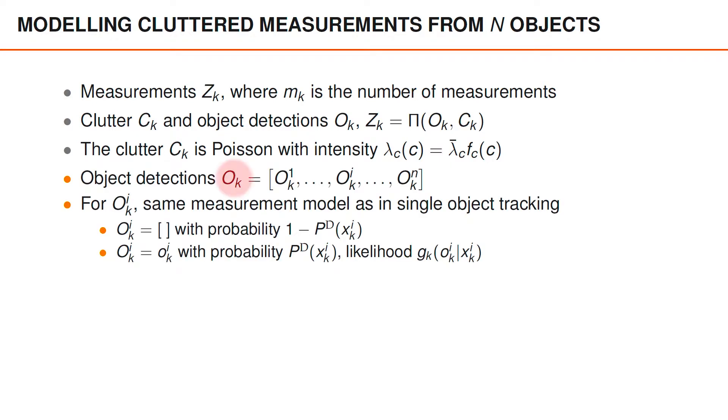The object detections consist of object detections from the N objects, so O1 all the way to ON. For each object I, the measurements OI are modeled by the same measurement model that we used in single object tracking. With probability 1 minus PD, we get no measurement, so a misdetection, and with probability PD, we get a single detection that is modeled by a likelihood GK.